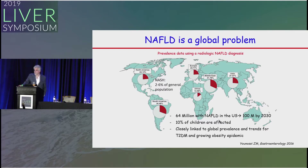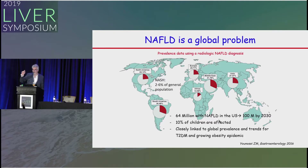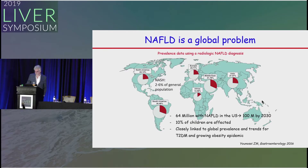I was asked to provide slides about the importance of our liver center. The first line I had was that liver disease affects 4.5 million people in the U.S. — but then I said, what about NAFLD? It dwarfs all other diagnoses. 64 million people in the U.S. have NAFLD, 10% of children are affected, and it's closely linked to global trends for type 2 diabetes and the growing epidemic of obesity.